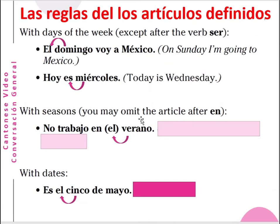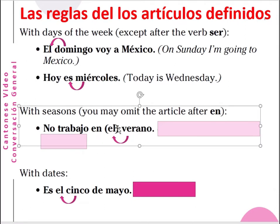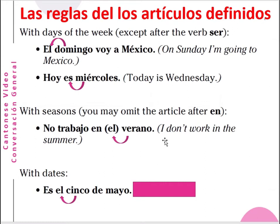And also with the seasons, you may omit the article after the word 'en': no trabajo en el verano — I don't work in the summer. The word 'el' can be omitted before the season when it comes after 'en'. With dates: es el cinco de mayo — it is the 5th of May. You need 'el' here: es el cinco de mayo — it is May the 5th.